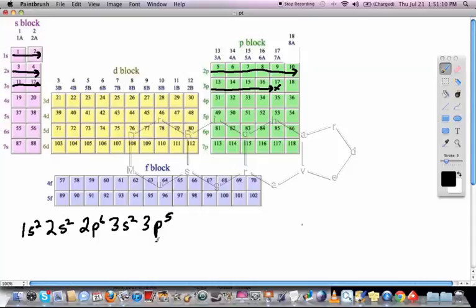Alright, so that is the full electron configuration for Chlorine and it's 1s2, 2s2, 2p6, 3s2, 3p5. You'll notice it's not a coincidence but all these electrons add up to 17 which is the atomic number. You've got 5 plus 2 plus 6 plus 2 plus 2 which is 17.